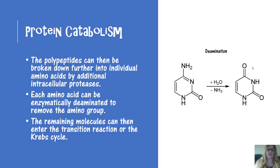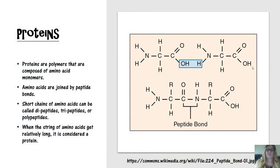Each amino acid can be enzymatically deaminated to remove the amino group. The remaining molecule can then enter the transition reaction or go directly into the Krebs cycle. Proteins are polymers of amino acids joined by peptide bonds.